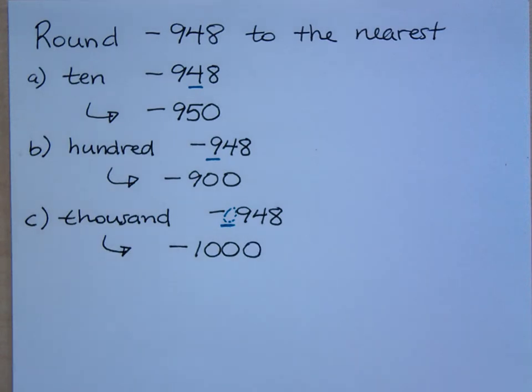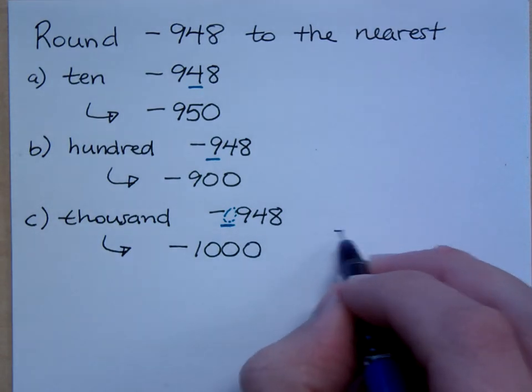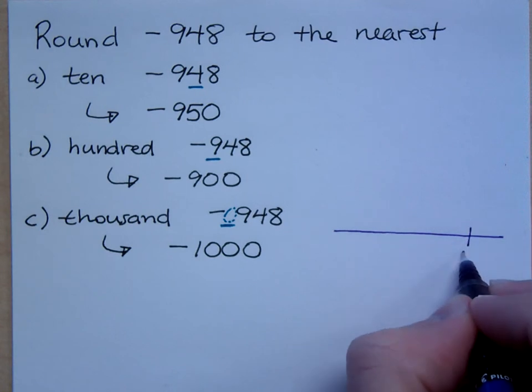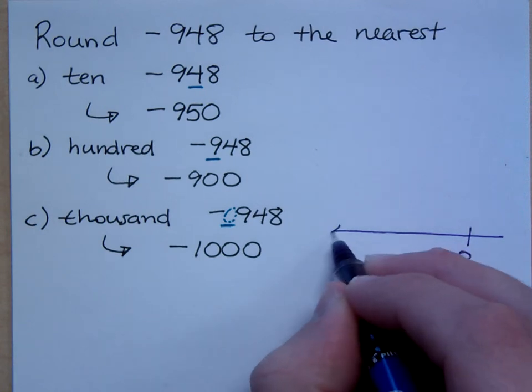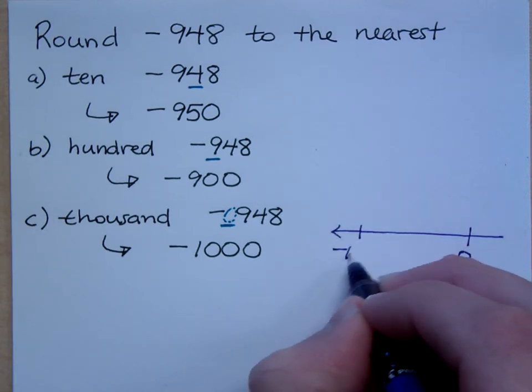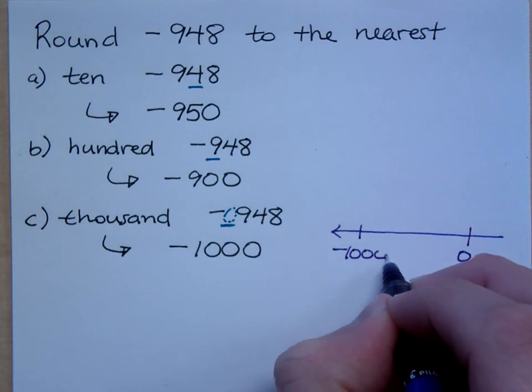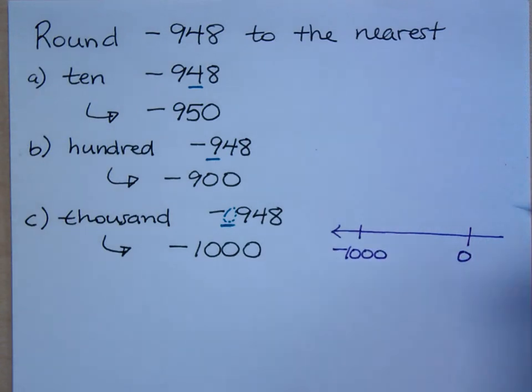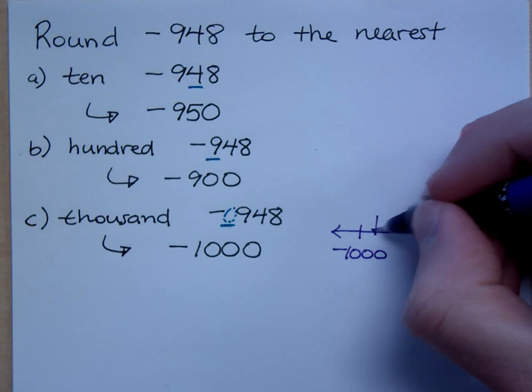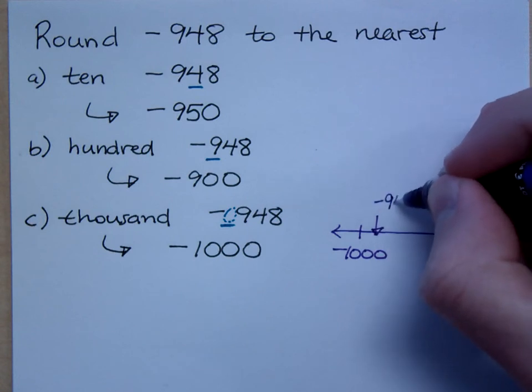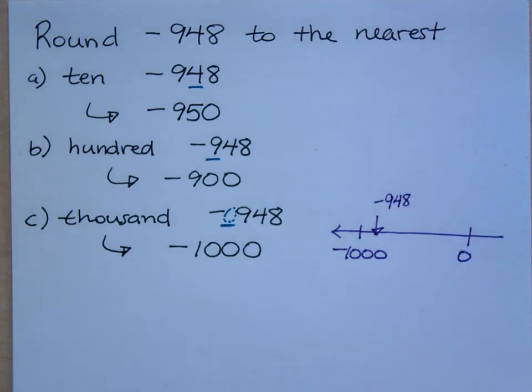You know what, if you are not sure about this, imagine what this would look like on the number line. If you've got 0 right here, negative 1,000 is out here on the left. Negative 948 would be right about here. Actually, I mean, it would be a lot closer to negative 1,000 than the one I'm showing you.